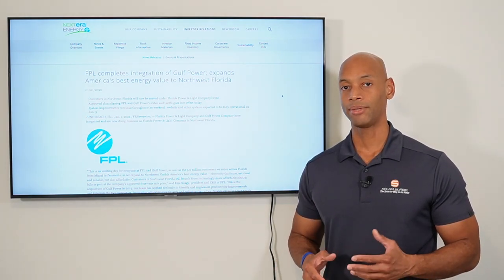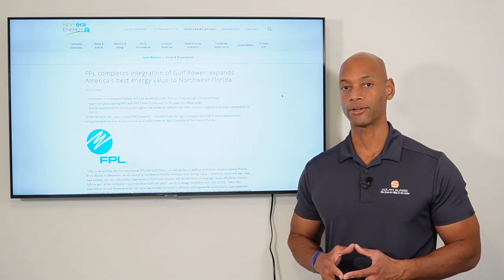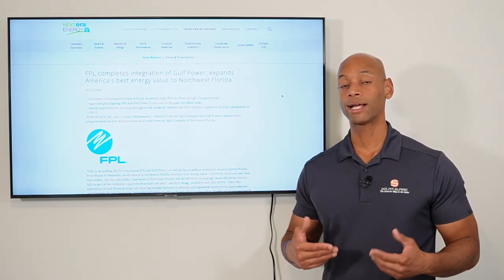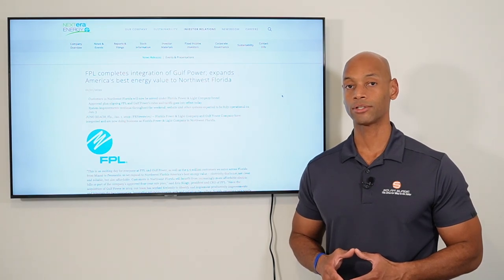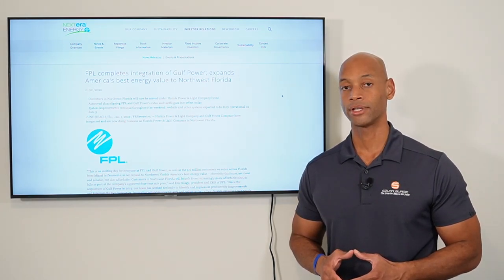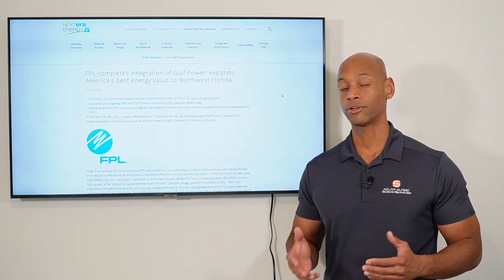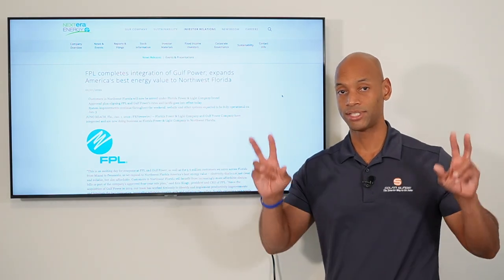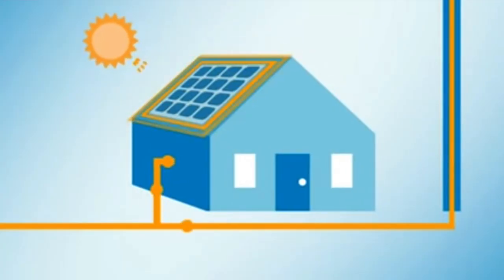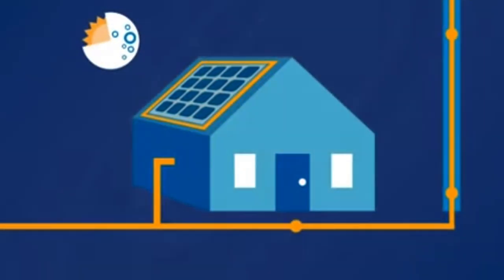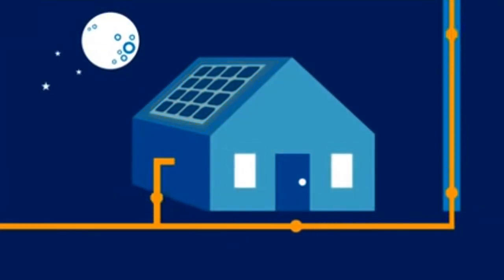What that means is if you choose to install solar panels on your home, not only can you directly power your home using the solar panels during daylight hours, but you can also earn credits on your account by selling the excess solar power to FPL during daylight hours, building up a bank of credits on your account, which you can then pull from during the evening hours. So when you look at the entire billing cycle, everything balances out to zero.